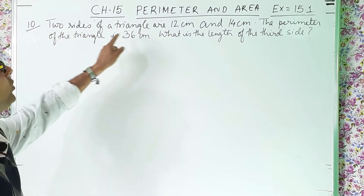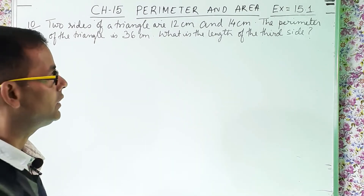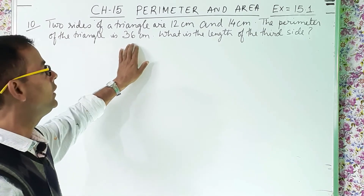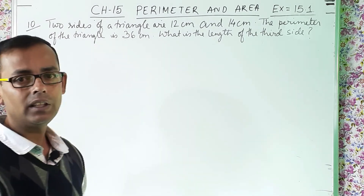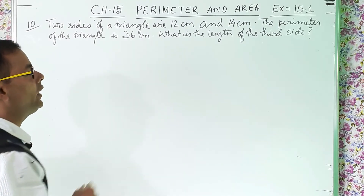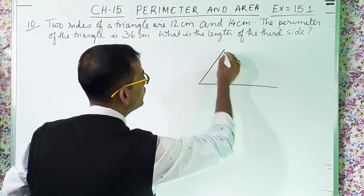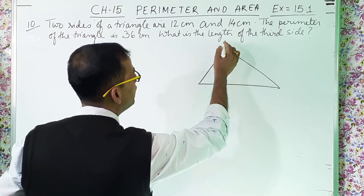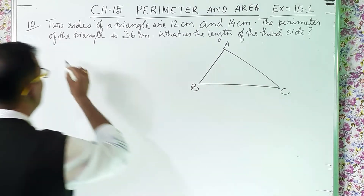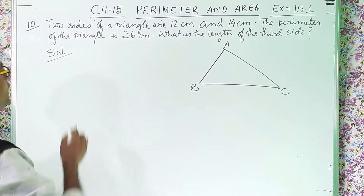Two sides of a triangle are 12 centimeter and 14 centimeter. The perimeter of the triangle is 36 centimeter. What is the length of the third side? So they are talking about a triangle — let us draw one triangle and give the name A, B, C.